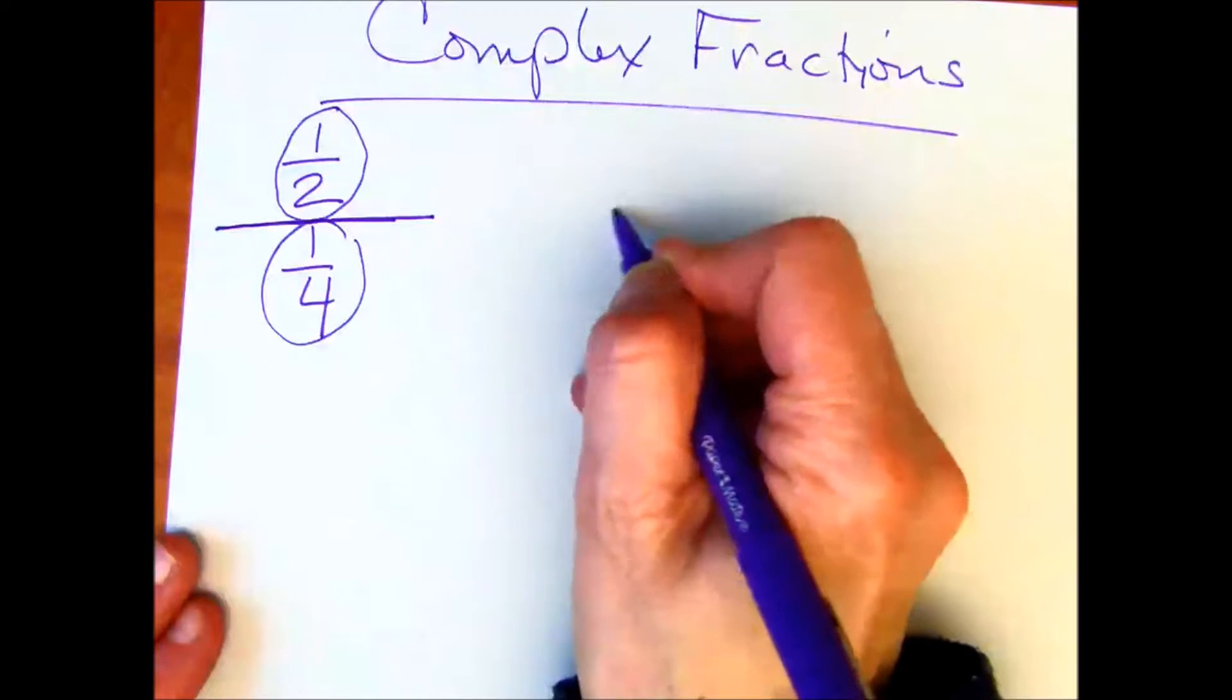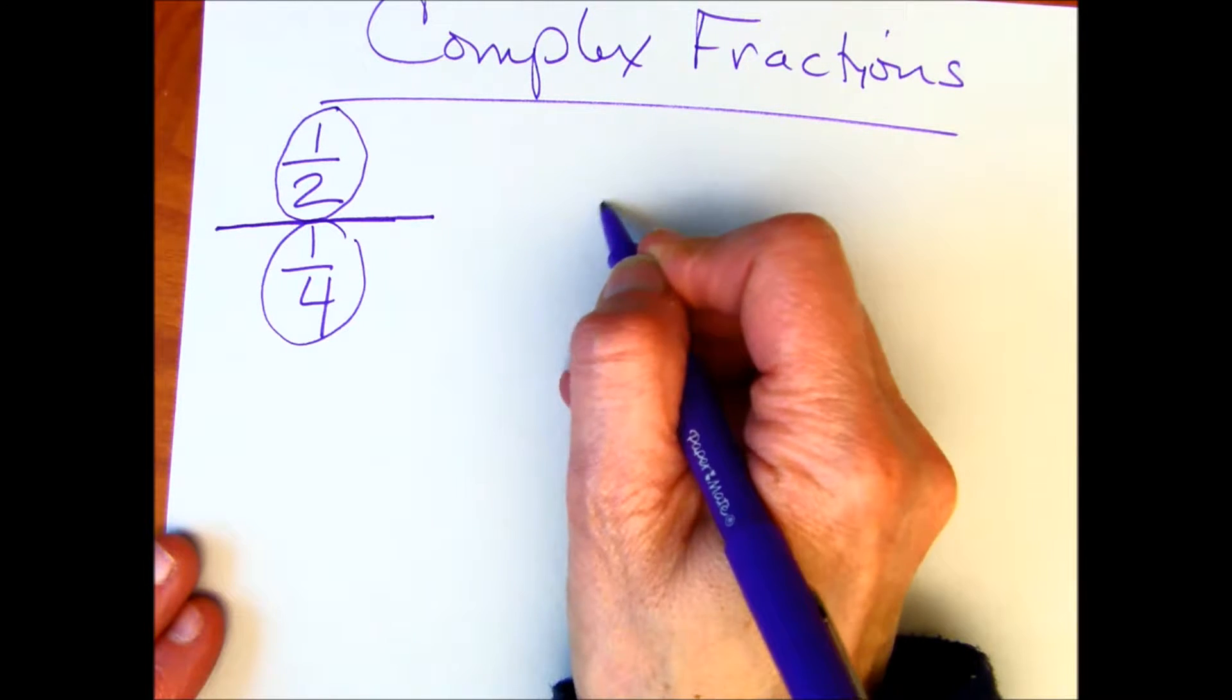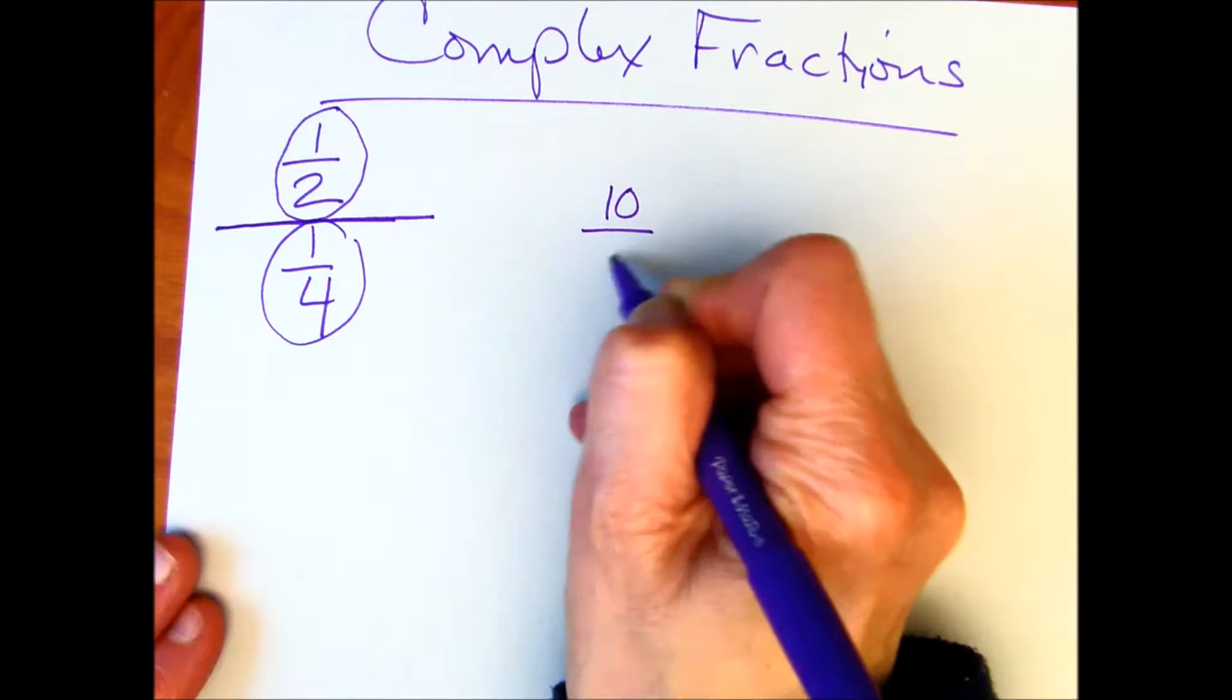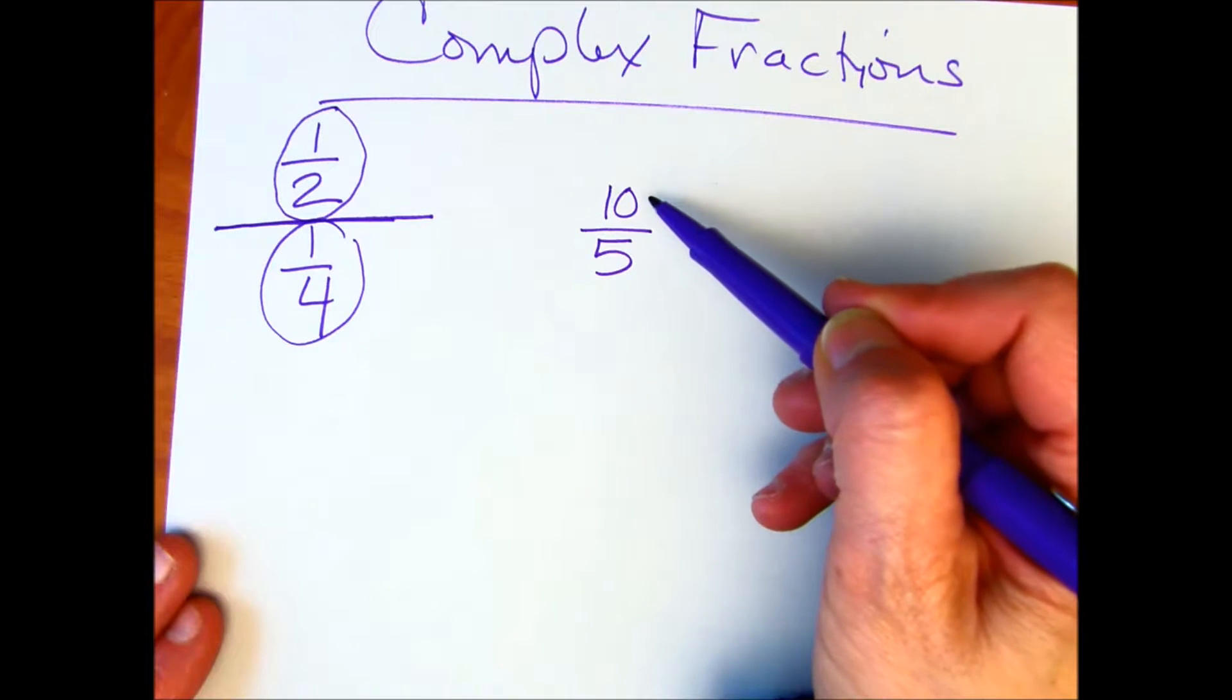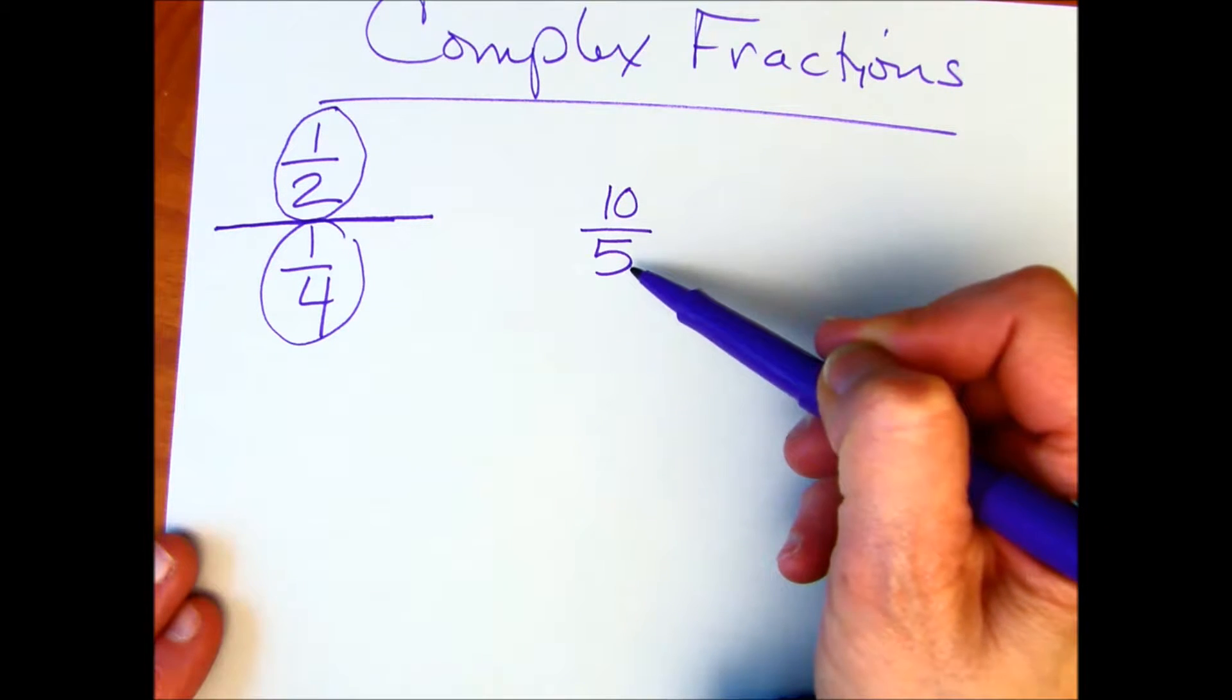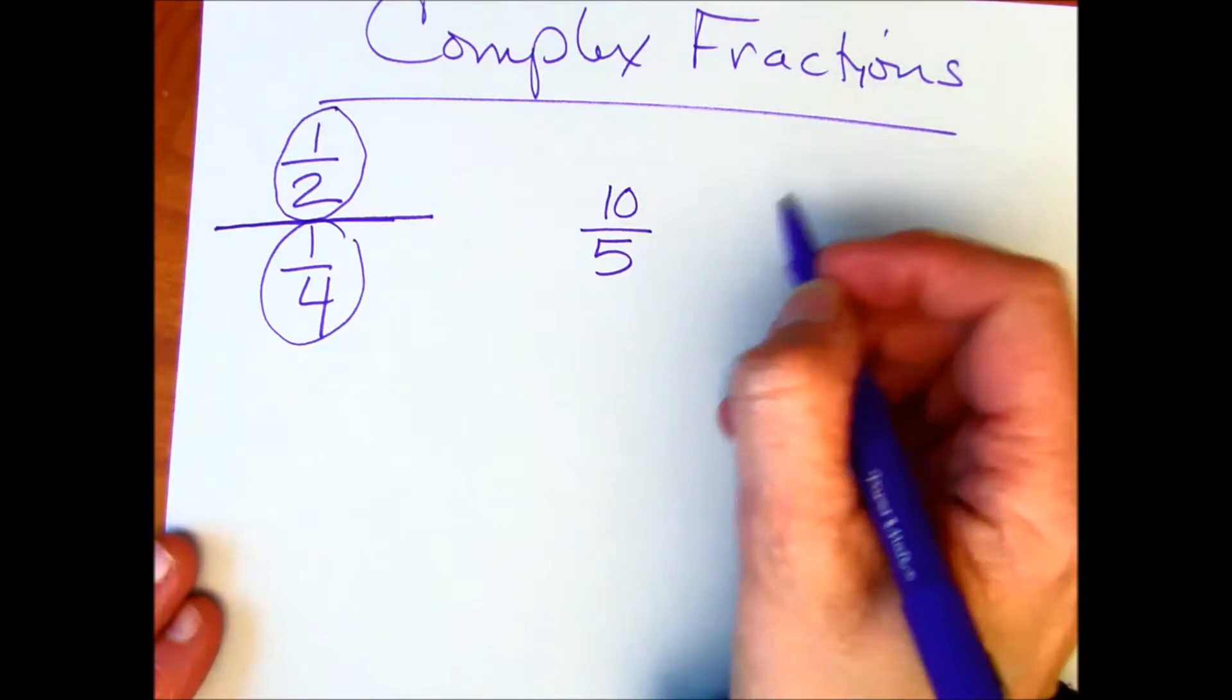if we were working with whole numbers and we had, say, ten divided by five. Even though we would read this as an improper fraction, ten-fifths, it's also a division problem.